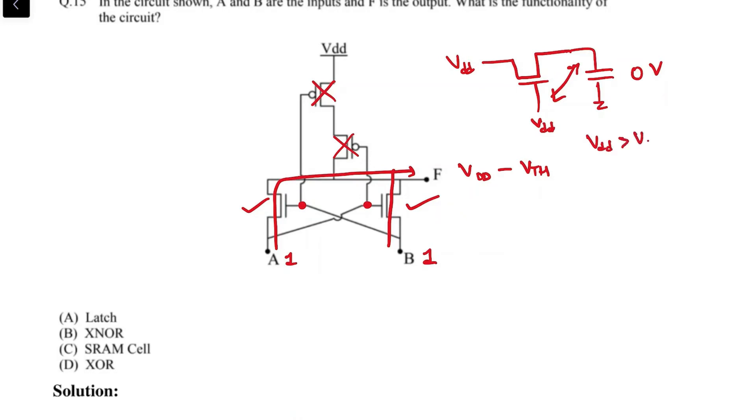What will happen is that the capacitor will charge up for as long as the Vgs is greater than Vth. Right now the Vgs, which is gate to source, is VDD, and it will keep rising until Vgs is equal to Vth.